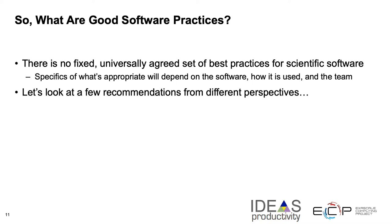So what are good software practices? Unfortunately, there are no universally agreed fixed set of best practices for scientific software, and that's partially because there are different makeups of the team and the use of the software. You may have software that's only used for a one-time task or some other personal purpose, or maybe you have a small team that is just using the software to publish papers, or a small number of users. Or you may have very large complex software with many users — maybe thousands of users — or your software might be a dependency for many other software systems. So let's look at some recommendations from different perspectives in the community.